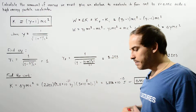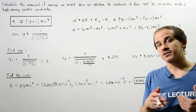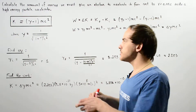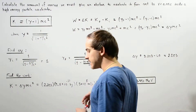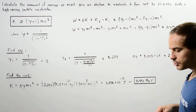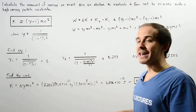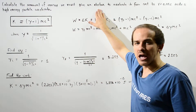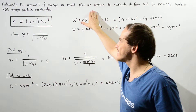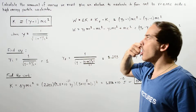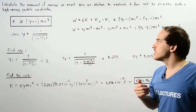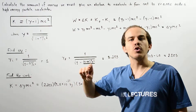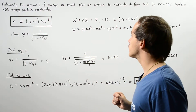Because the speed of that electron is very close to the speed of light in a vacuum, we must use the relativistic kinetic energy equation. We're going to use the work-energy principle, so the amount of work that must be done on that electron by the electric field is given by the change in relativistic kinetic energy of that particle.